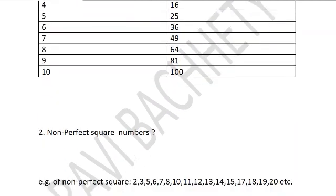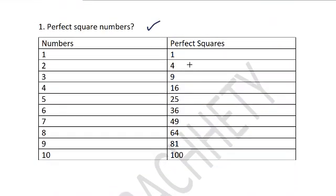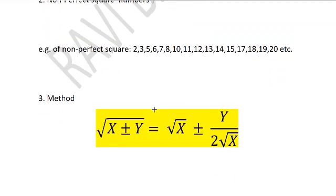Now what are non-perfect square numbers? Any natural number other than these numbers are called non-perfect squares. So 2, 3, 5, 6, 7, 8, 10, 11, 12, 13, 14, 15 and so on. There is a simple method.